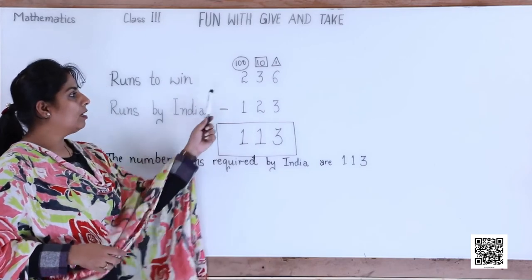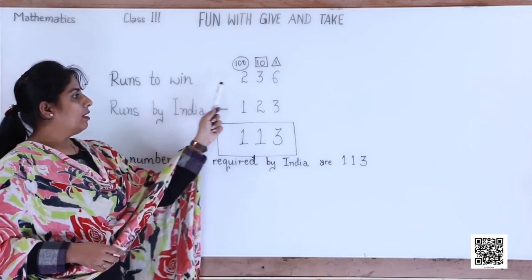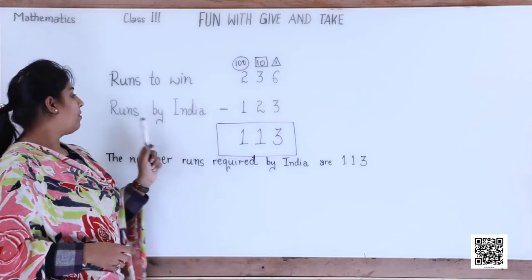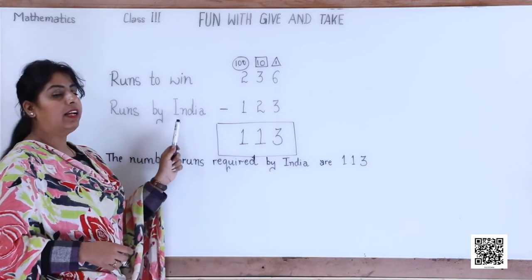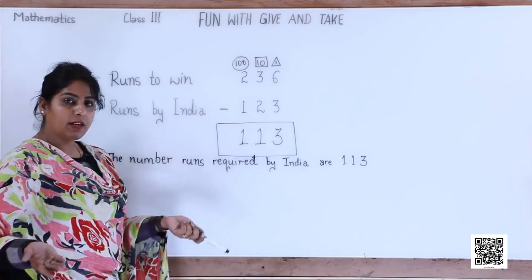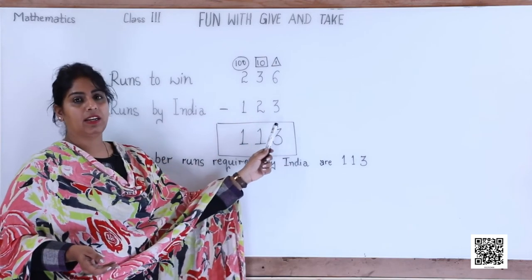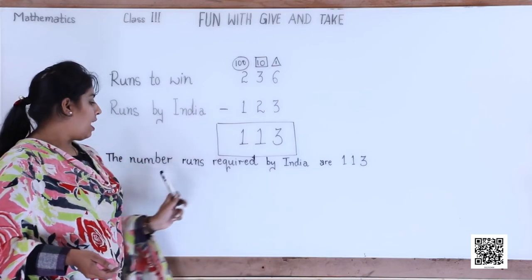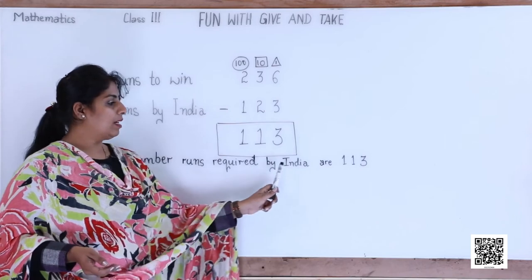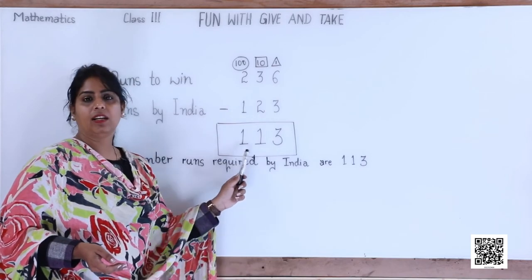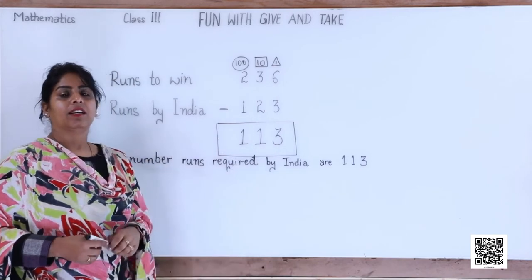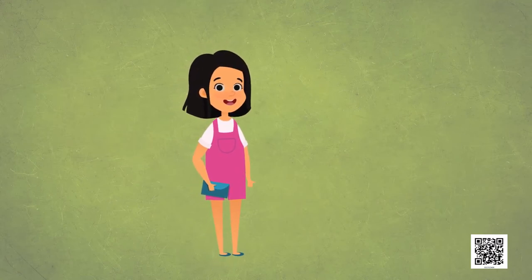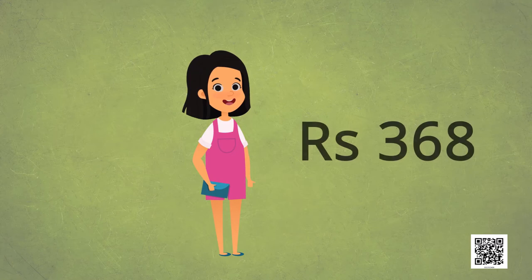I hope your answer also matches mine! The number of runs required by India to win are one hundred and thirteen. We subtracted the runs already made by India — that is 123 — from the runs needed to win, and the result is 113.